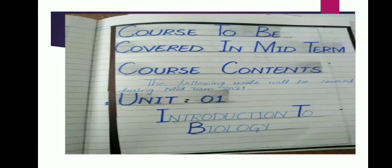Shape the headings from both sides. The first heading is 'Course to be Covered in Midterm' — the first letter in two lines and the rest in one line with a blue marker. The next heading is 'Course Contents: The following units will be covered during midterm 2021.' Unit 1 is Introduction to Biology, Unit 2 is Solving a Biological Problem. This is the course content of biology midterm.